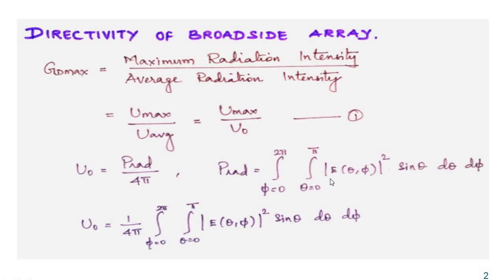The radiated power expression must be divided by 4π, giving us: U_naught = (1/4π) × integral over φ from 0 to 2π, integral over θ from 0 to π, of |E(θ,φ)|² sin θ dθ dφ. We need to integrate this expression with respect to θ and φ to find U_naught and obtain the total directivity.